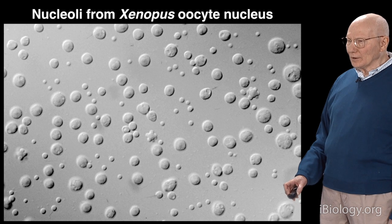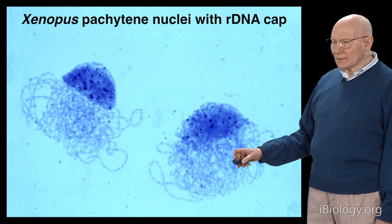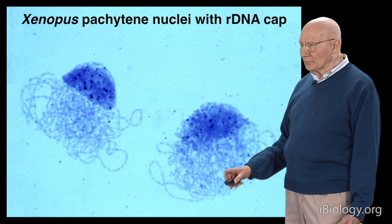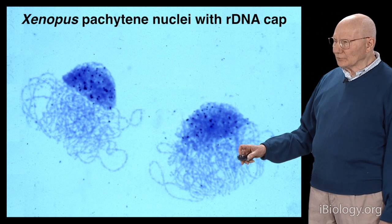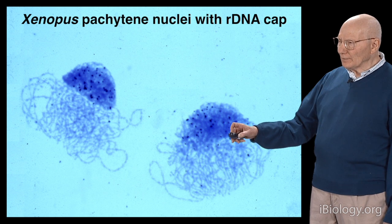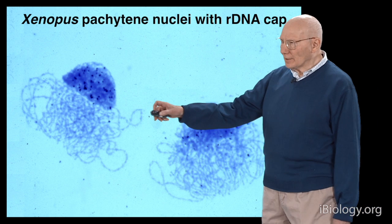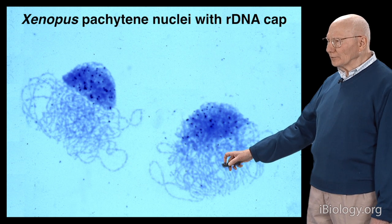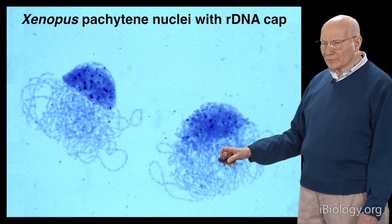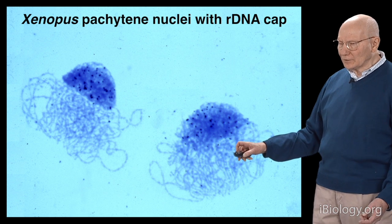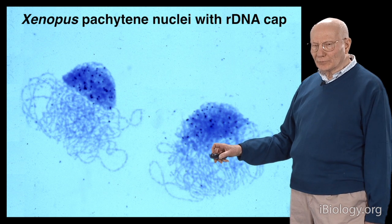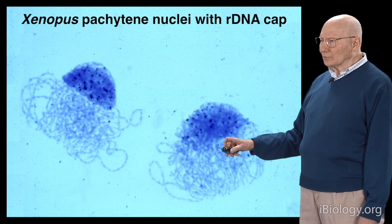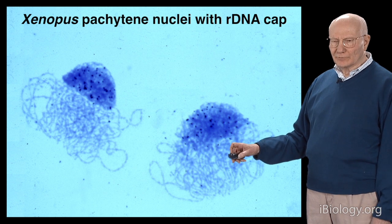I studied the origin of that DNA, and what I found was that it was actually synthesized at one specific time in the early history of the formation of the oocyte. One could see in these early cells, early nuclei, that there was a cap of DNA here — you can see the cap over here. You can see the chromosomes here and down here in this nucleus. So in these two nuclei, you have the chromosomes, but then you have this huge cap of extra DNA, which in fact was the ribosomal genes that had somehow come out of the chromosome and amplified to give a very large amount of this one specific sequence.